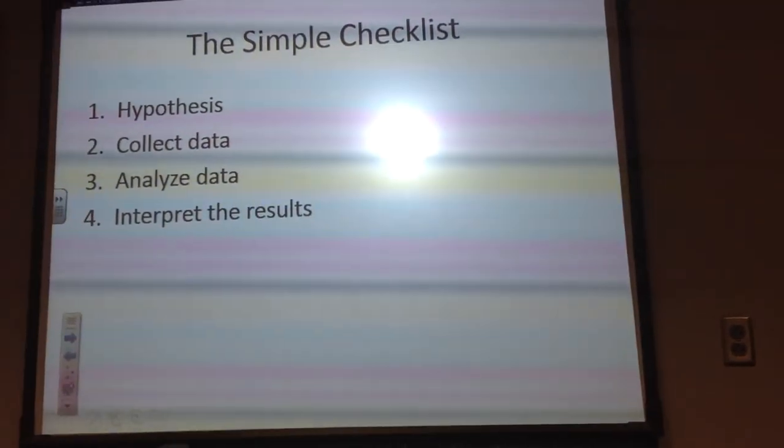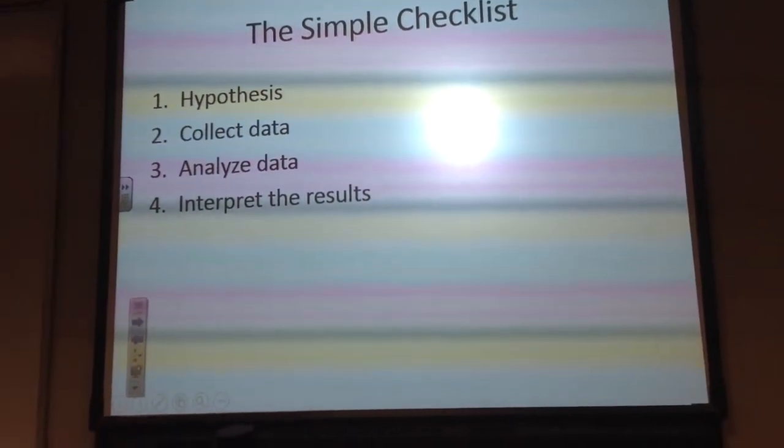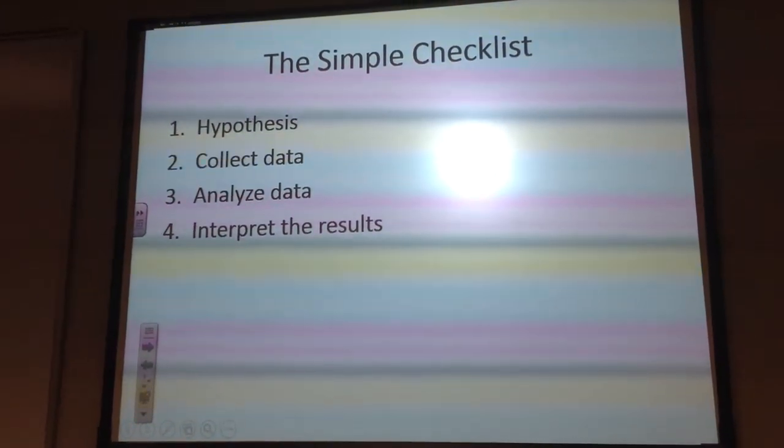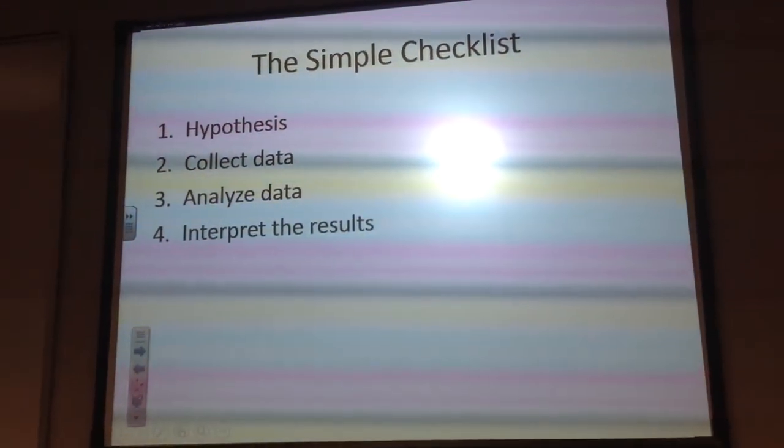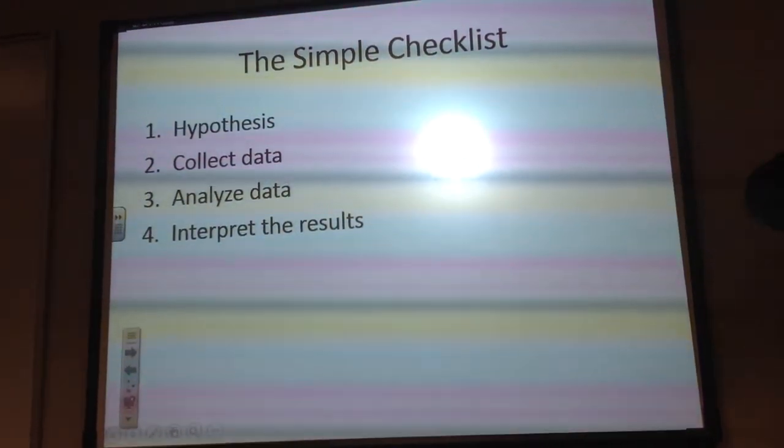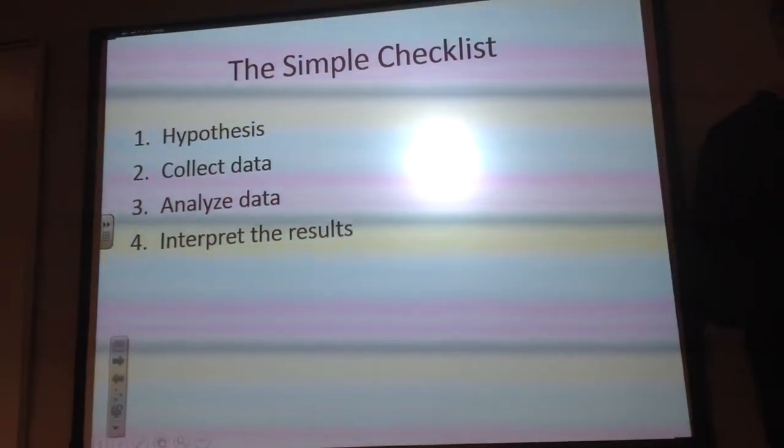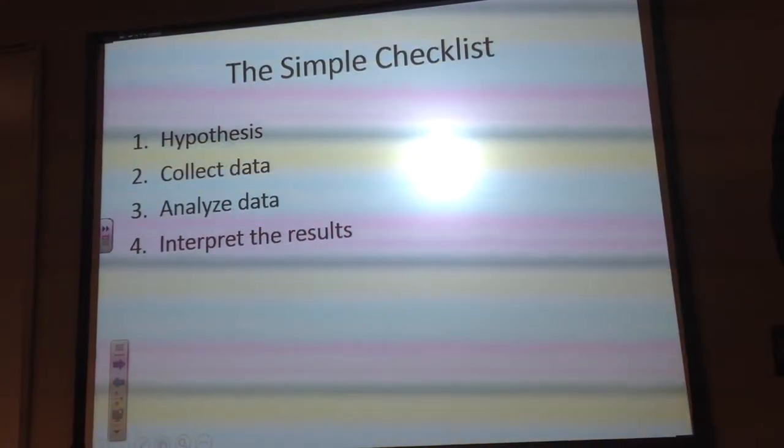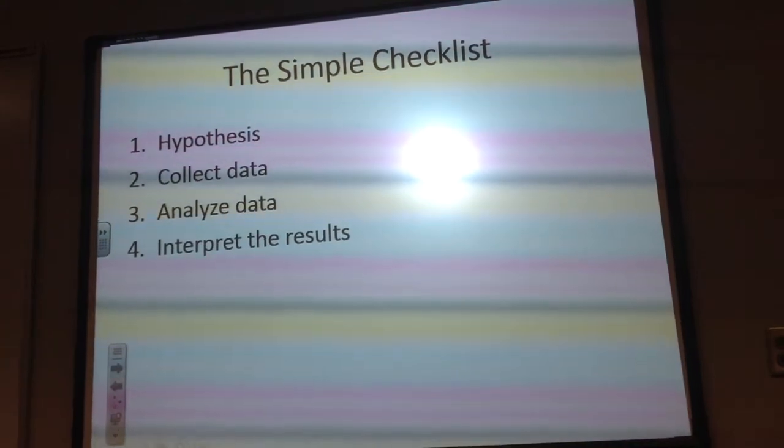So in order to get through this, we have what I like to call the simple checklist. We have to have a hypothesis, which we all have, right? Good. Then we're going to collect data, which you have a plan for. Then you're going to analyze data, which you have to develop your plan for. And then you have to interpret the results, which you're not going to get to this step with your project here, but you can at least kind of see how it all fits together.